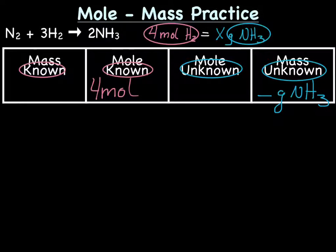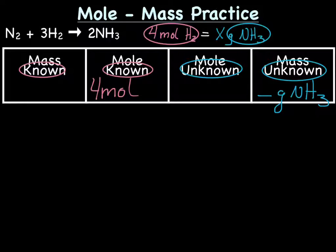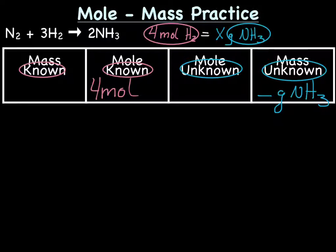There is a box between where we're starting at mole known and where we're trying to end at mass unknown—this is the mole unknown area. It's not possible to jump directly from mole known to mass unknown; we have to go through mole unknown. So we know we'll need to calculate mole NH3 along the way. That's what makes the map so handy—once you set it up, it shows you exactly what to do.